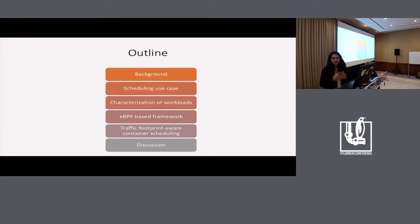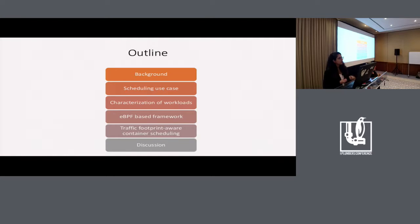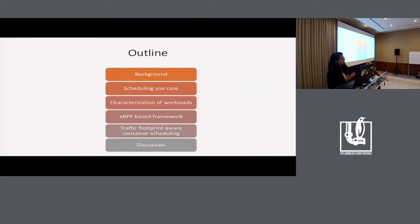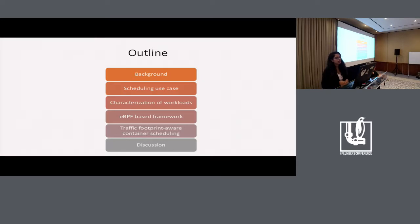Quantifying network resource requirements of application workloads is a challenging task because network is a highly dynamic and distributed resource. The spectrum of applications getting deployed in data centers and cloud environments today is widening. Getting visibility into network characteristics of these application workloads will enable intelligent placement of these workloads in containers and VMs. This work takes a stab at making network a first-class citizen in areas like container placement.